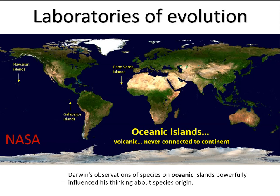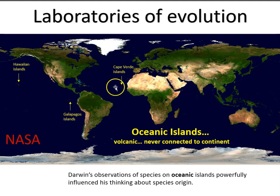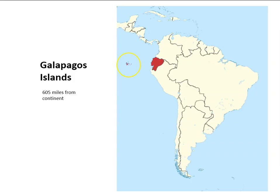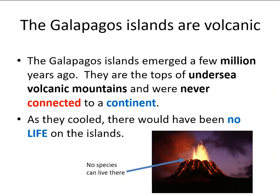An influential set of observations made by Darwin was what he found on oceanic islands — volcanic islands that are far from the nearest continent and were never connected to it. The species he found on these islands would powerfully influence his thinking. The famous set of islands associated with Darwin are the Galapagos Islands, some 600 miles off the coast of Ecuador. Today we know the Galapagos Islands emerged a few million years ago — they are the tops of undersea volcanic mountains and were never connected to a continent.